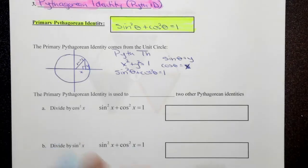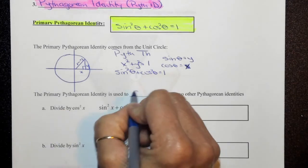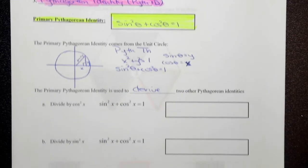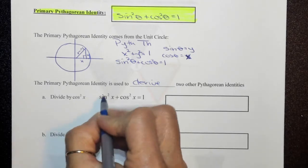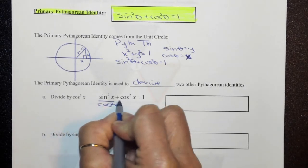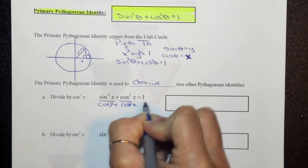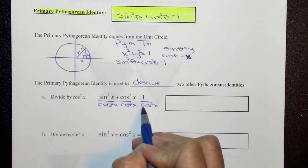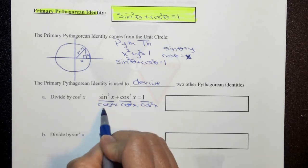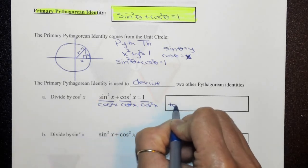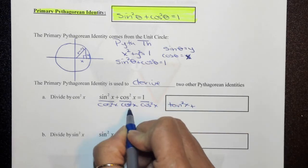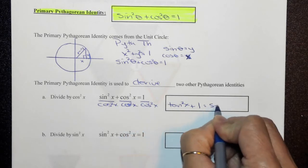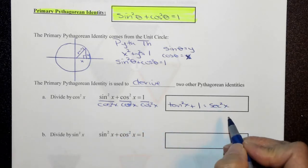The primary Pythagorean identity is used to derive the other two Pythagorean identities, and I went through this in Unit 1, but basically if I were to divide by the cosine squared, we're going to use our quotient and our reciprocal identities here. So the quotient identity would give me the tangent squared plus cosine squared over cosine squared is 1 is equal to reciprocal identity is the secant squared of x, or theta.